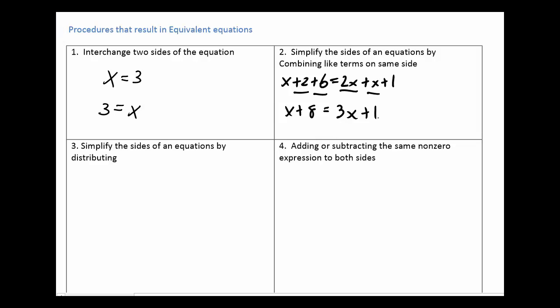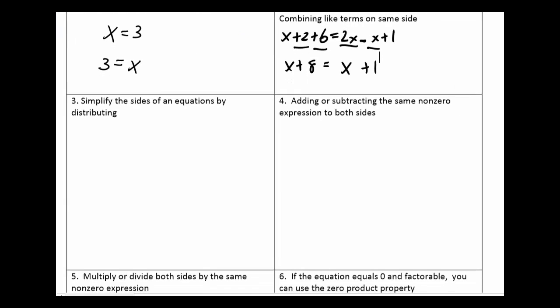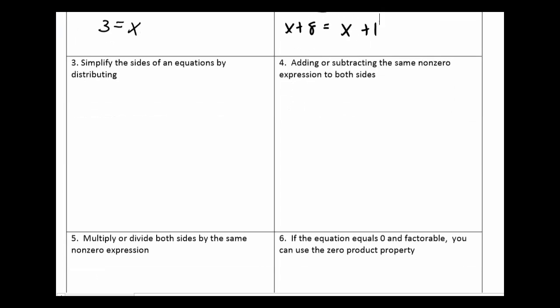Combine may mean subtract. For example, if it said 2x minus x, we just have x there. The idea of combining on the same side — it just has to be on the same side, and then we can combine them using the signs that we see.